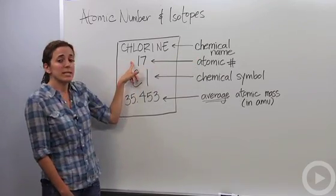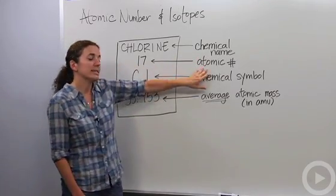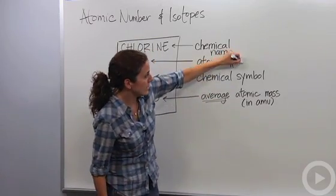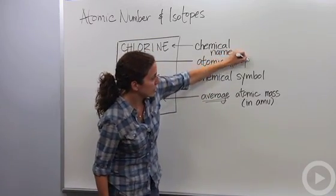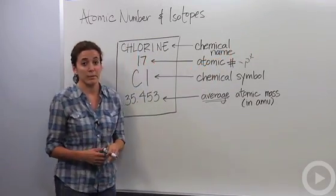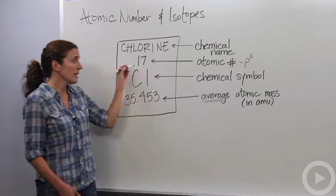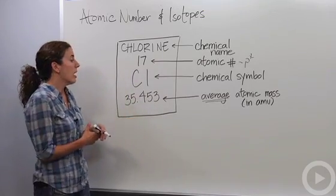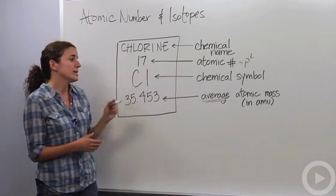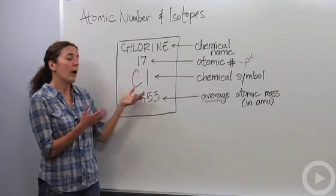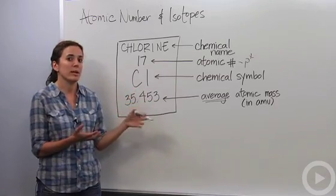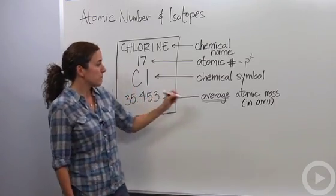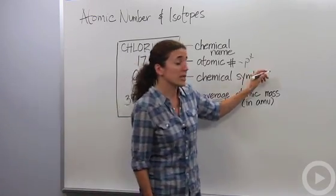The number 17 will be on the periodic table, and that indicates the atomic number. It always represents the number of protons in that particular element — in this case, chlorine has 17 protons. Cl is the chemical symbol, the way we might see it in a chemical formula — a shortened way to represent the element.